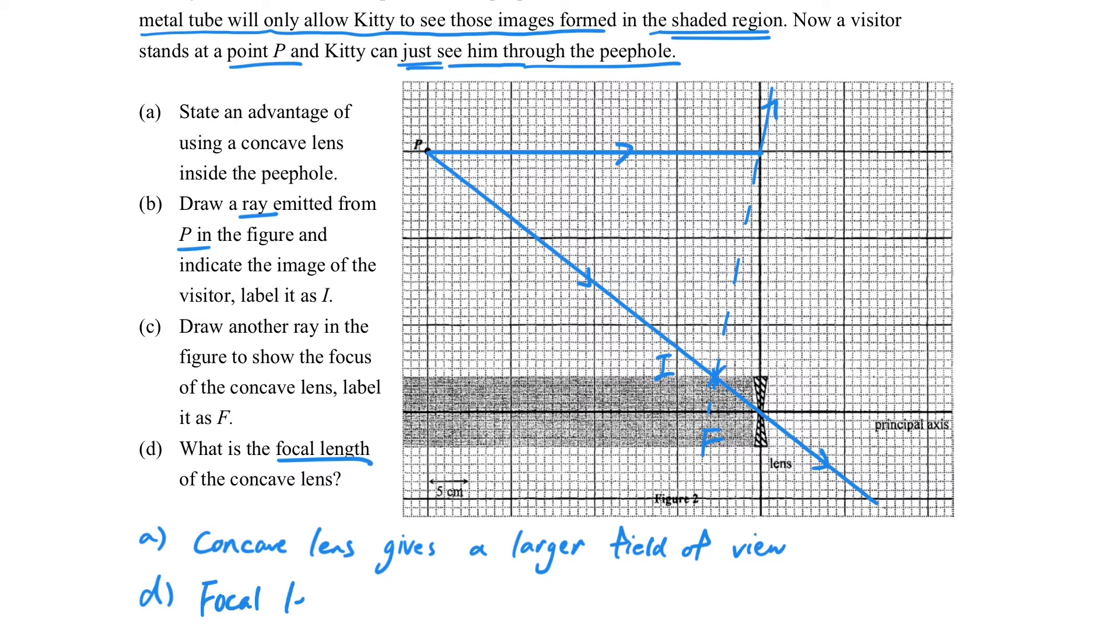So for part D, it's simple because focal length is just the distance between the focus and the lens, which is about 6 cm here.